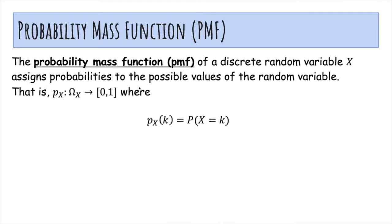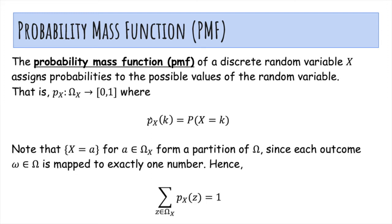So the probability mass function just summarizes the probabilities of each outcome. And notice that X taking on each value in its range forms a partition of omega since each outcome is mapped to exactly one number. And hence, if you sum over the entire range of the probability, that sum has to equal one because exactly one thing happens.